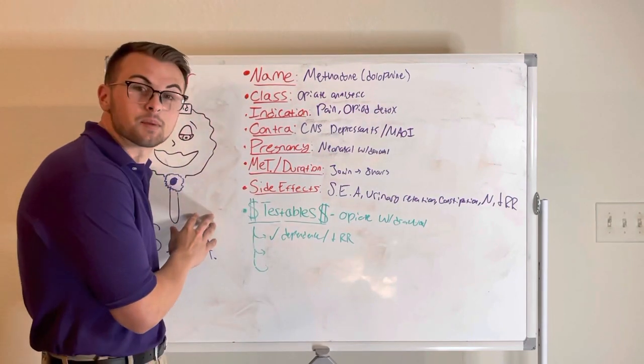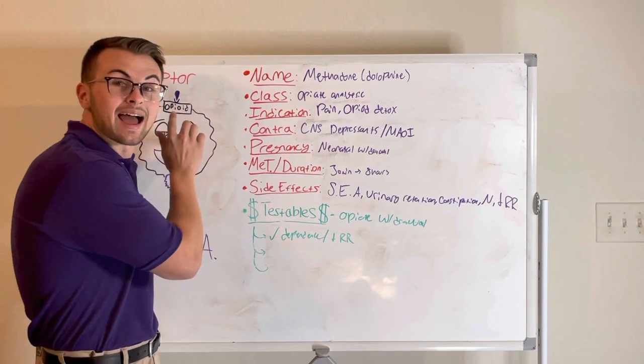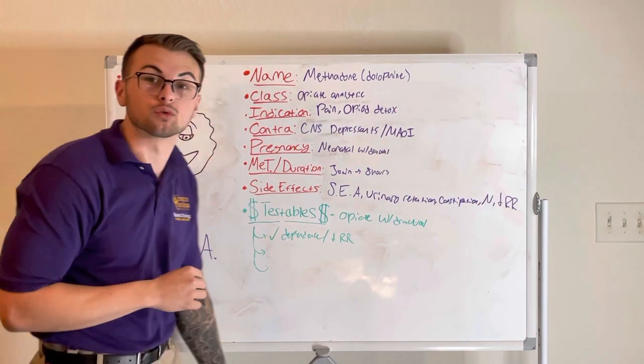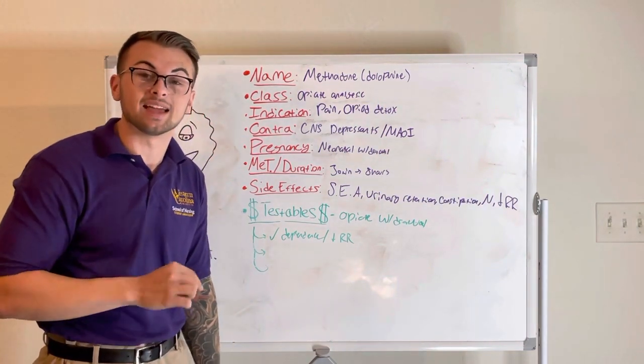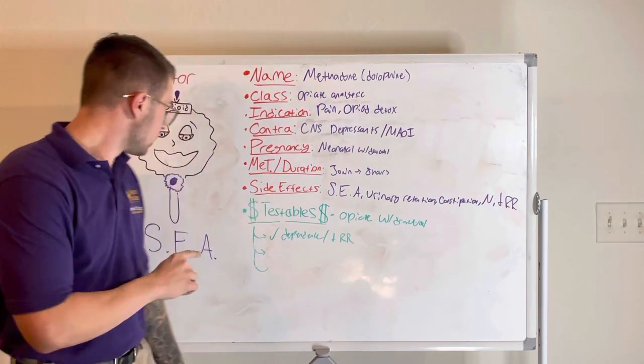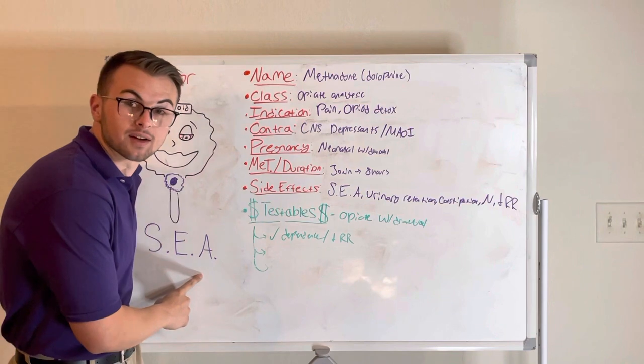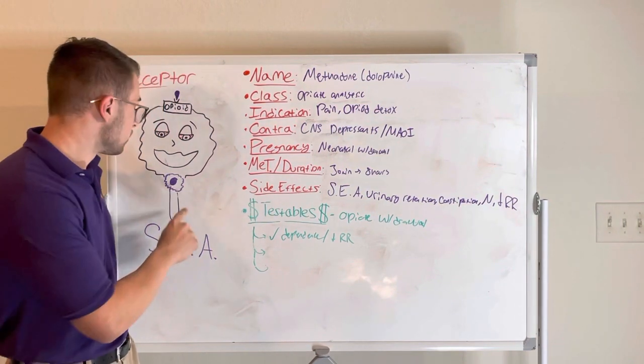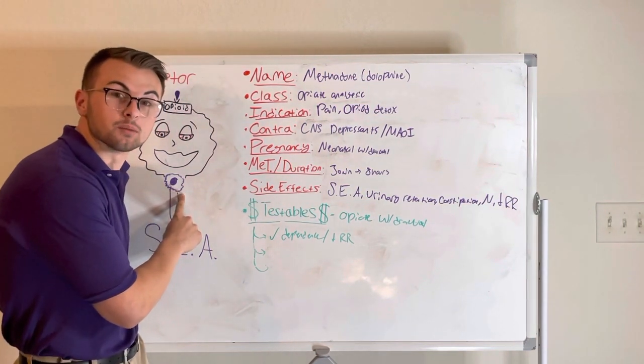This medication acts as an opiate agonist to help those going through opioid withdrawal. It causes sedation, euphoria, and analgesia, and also suppresses the respiratory and cough centers in the medulla.